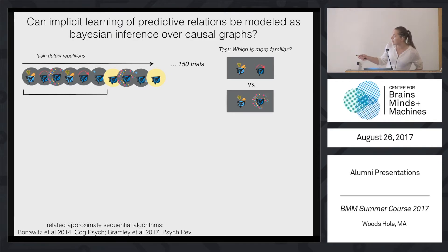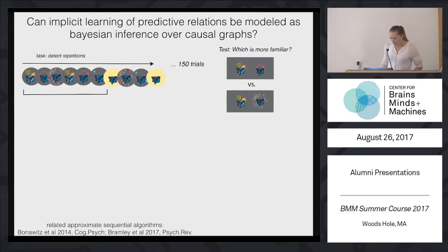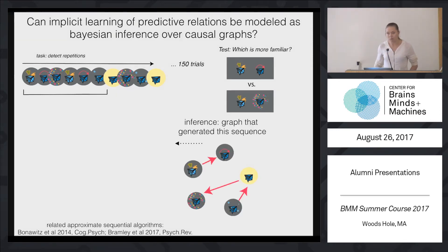For example, these leaves are always followed by the object tilting. What will happen is that despite your unawareness and lack of attempts to learn this regularity, you will exhibit significant learning later on in a forced-choice test.